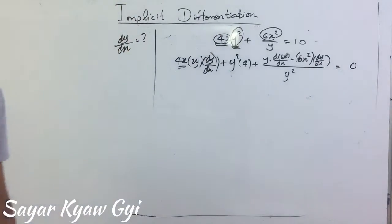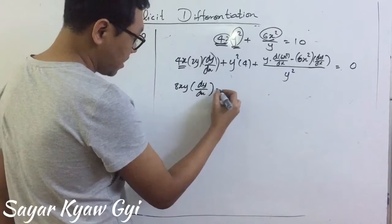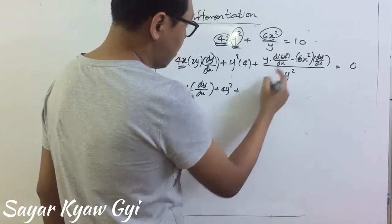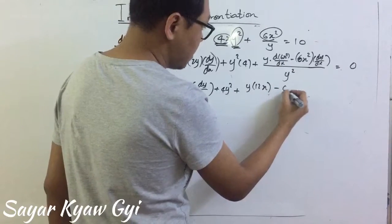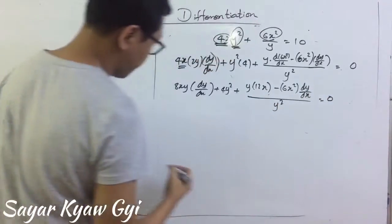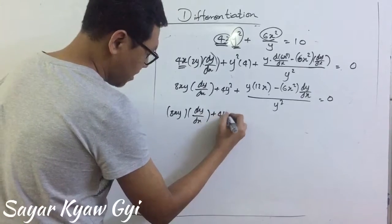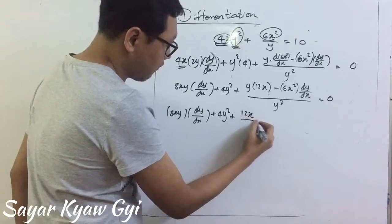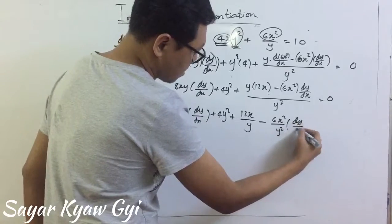We get 0 on the right side. So this will be 8xy dy by dx plus 4y squared. And this one, I'm going to break it down: y times 12x — that is 12x over y — minus 6x squared dy by dx over y squared. I'm going to separate the denominator. We want to take out dy by dx as the common factor. So here we have 8xy minus 6x squared over y squared times dy by dx.